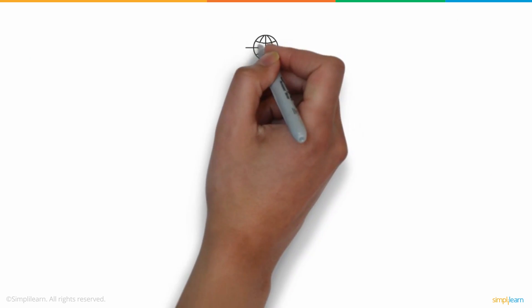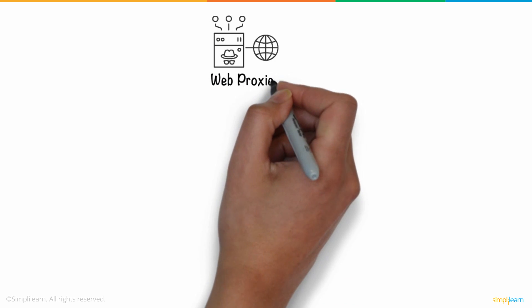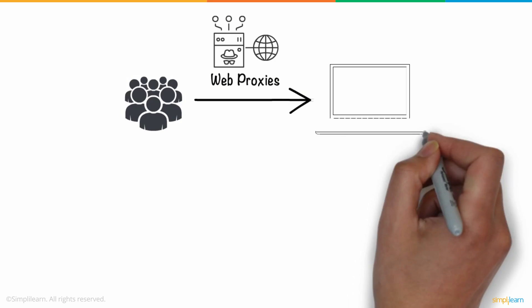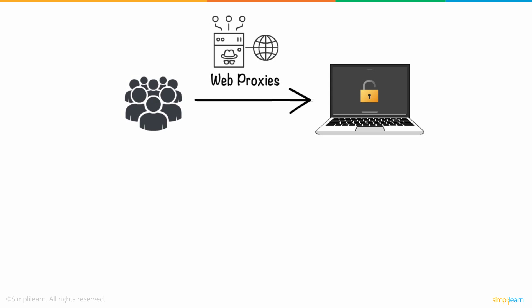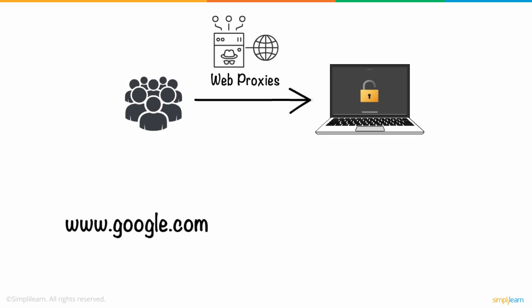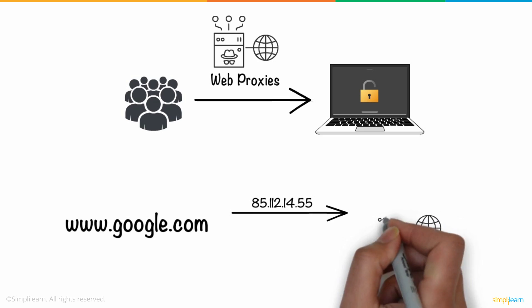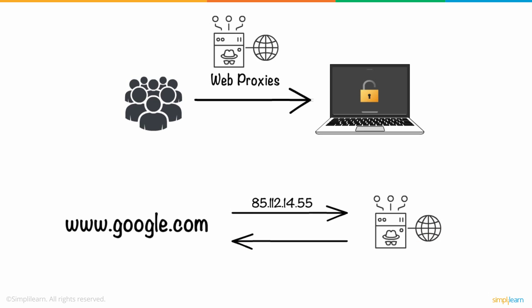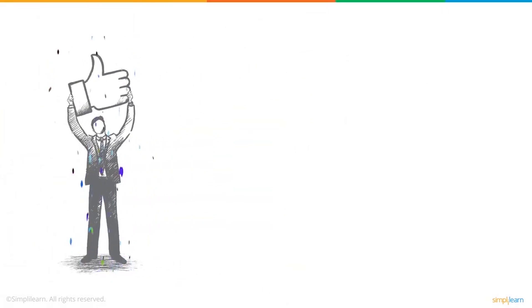In addition, there are services online that function as web proxies, allowing users to access blocked content without any setup from their end. They can enter the target URL, and the web proxy will route data from its physical server. This level of freedom is hard to come by in the case of VPNs, making proxies an ideal solution for casual browsing.